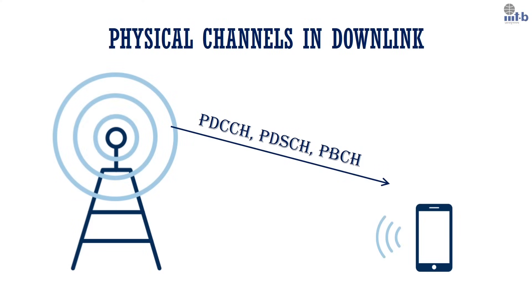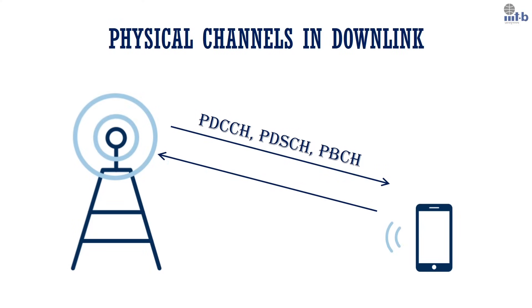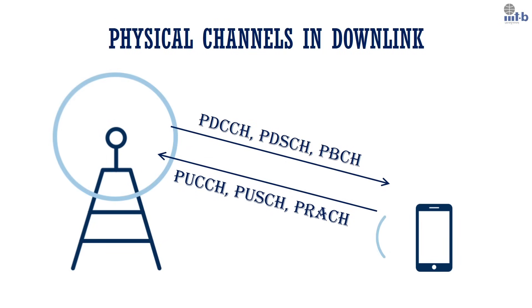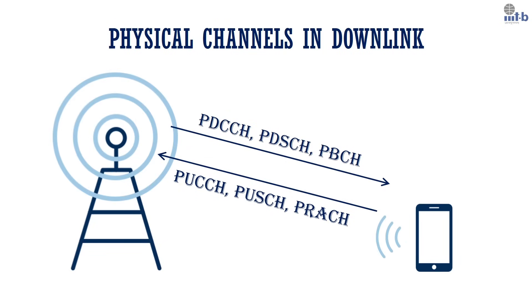On the other hand, data transmission from the user to the base station is called uplink, which includes the physical uplink control channel PUCCH for control signaling, the physical uplink shared channel PUSCH for user data, and the physical random access channel PRACH for random access procedures.